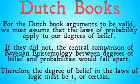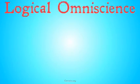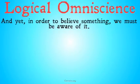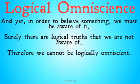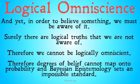If you've been watching all these videos, this should look very similar to the beginning of the last video. We're going to start diverging a little bit here. The problem of logical omniscience goes something like this. In order to believe something, we have to be aware of it — we have to have some sense of it. It would be strange for us to believe in something we'd never heard of. Surely, there are logical truths that we are not aware of. There are probably an infinite number of logical truths. Therefore, we can't be logically omniscient, and so degrees of belief cannot map onto probability, and Bayesian epistemology sets an impossible standard.